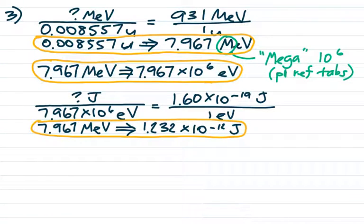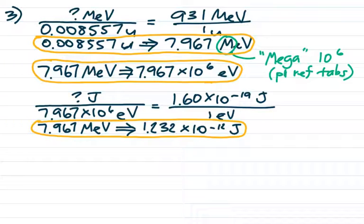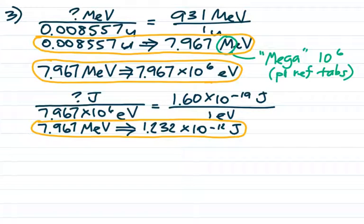That almost seems like a math mistake it's so small, but remember that's for one tritium atom. In practice you're dealing with billions and billions of these processes happening at once. To give a sense of scale: a 100-watt light bulb draws 100 joules per second. One tritium atom isn't much, but they come in huge numbers, so you do wind up with a lot of energy.